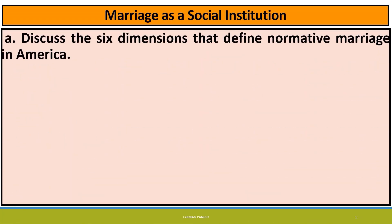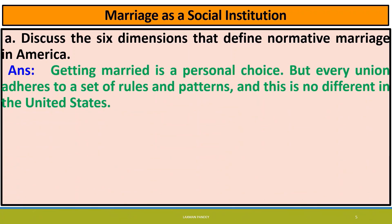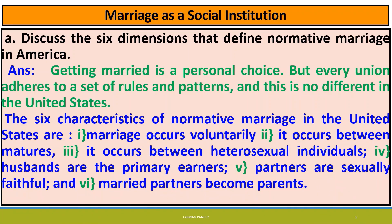Discuss the six dimensions that define normative marriage in America. Getting married is a personal choice but every union adheres to a set of rules and patterns, and this is no different in the United States. The six characteristics of normative marriage in the United States are: one, marriage occurs voluntarily; two, it occurs between matures; three, it occurs between heterosexual individuals; four, husbands are the primary earners; five, partners are sexually faithful; and six, married partners become parents.